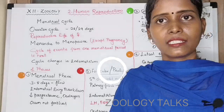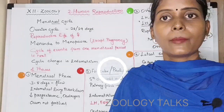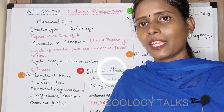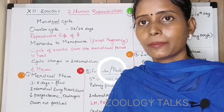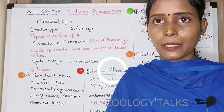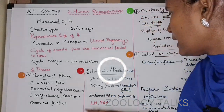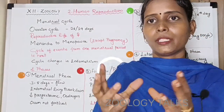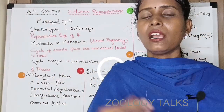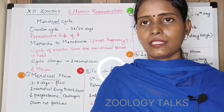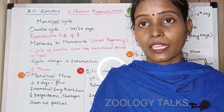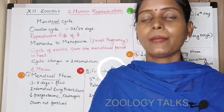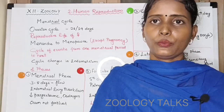Simultaneously, changes occur in the uterus. We know that the menstrual phase breaks down the uterine endometrium. After that breakdown, the endometrium regenerates — the blood vessels regenerate and proliferate. That is why this phase in the uterus is called the proliferative phase.